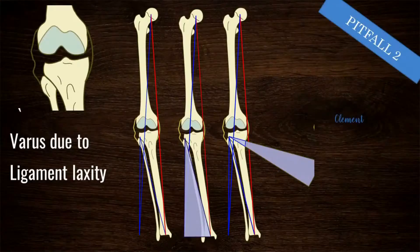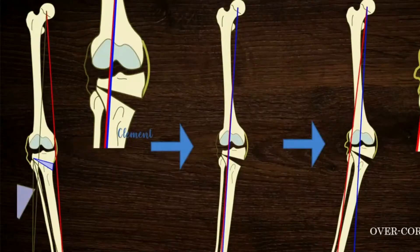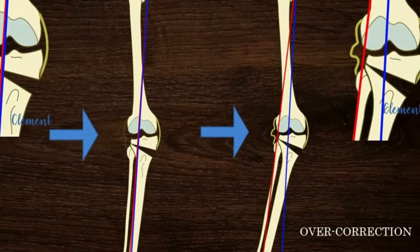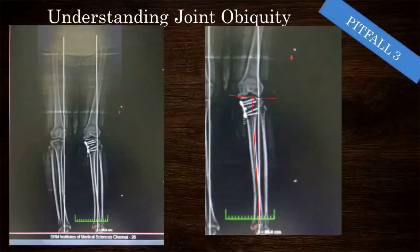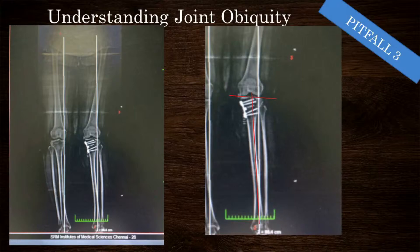Another pitfall is missing the varus deformity due to soft tissue laxity, which would typically result in overcorrection as the soft tissue laxity collapses once the knee goes into valgus. In major corrections over 12 mm, the resultant MPTA angles should be calculated. An MPTA of 94 degrees would be acceptable; anything more would result in joint shear and poor long-term outcomes.